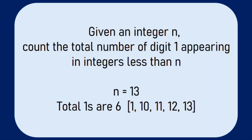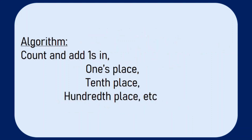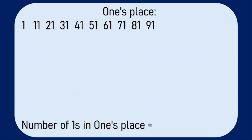Now let us understand the algorithm before implementing the Python code. Please subscribe to our channel if you have not already subscribed. The outline of the algorithm is to count and add the ones individually in ones place, tens place, and hundreds place subsequently. The first step is to get the formula to calculate the number of ones in the ones place.